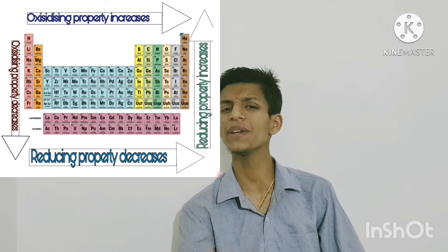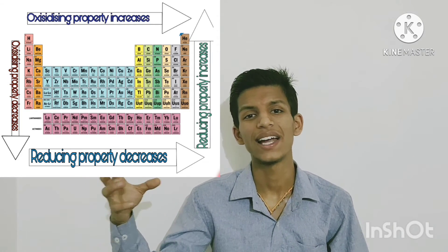Now let's look at the trend in the periodic table. While going left to right across a period, nuclear charge increases, due to which atomic radius decreases. Due to the increase in nuclear charge and decrease in atomic size, oxidizing power increases while reducing power decreases.